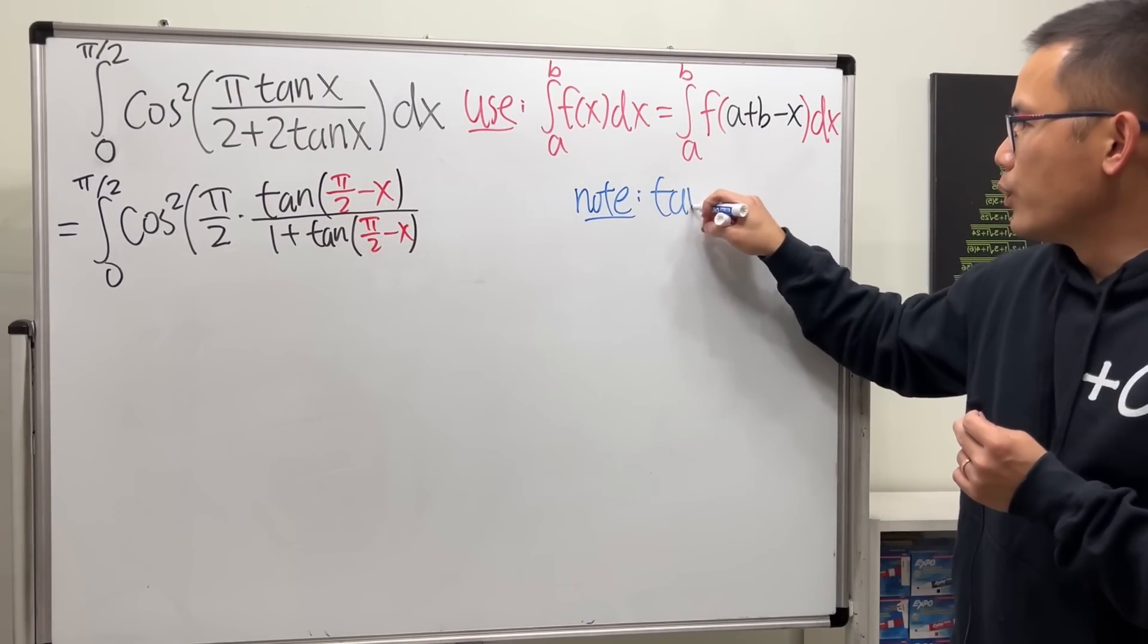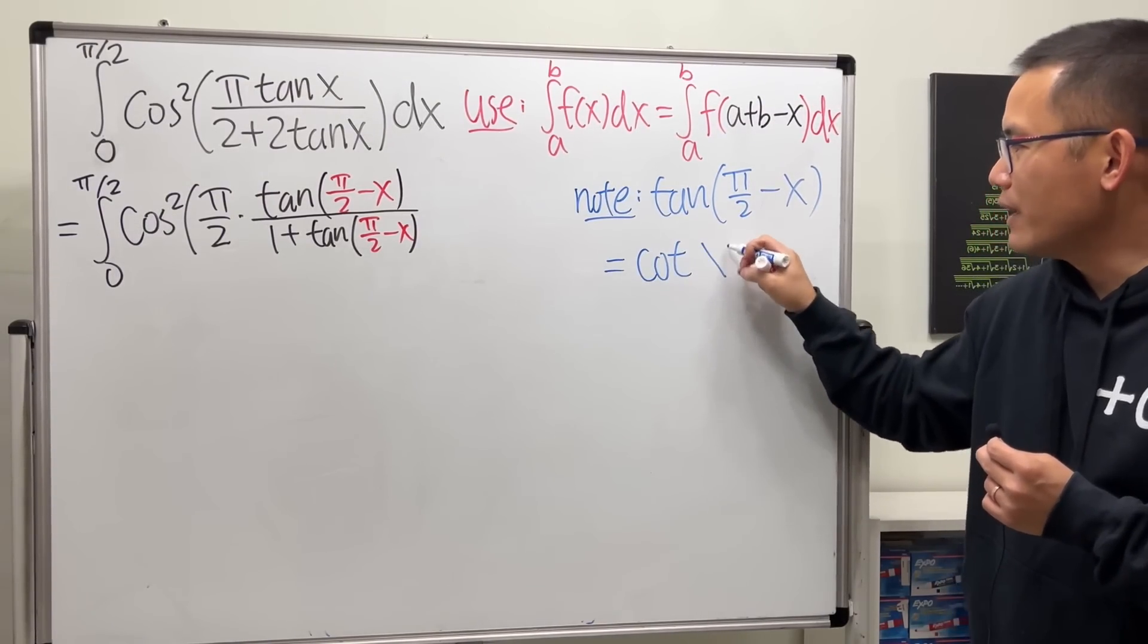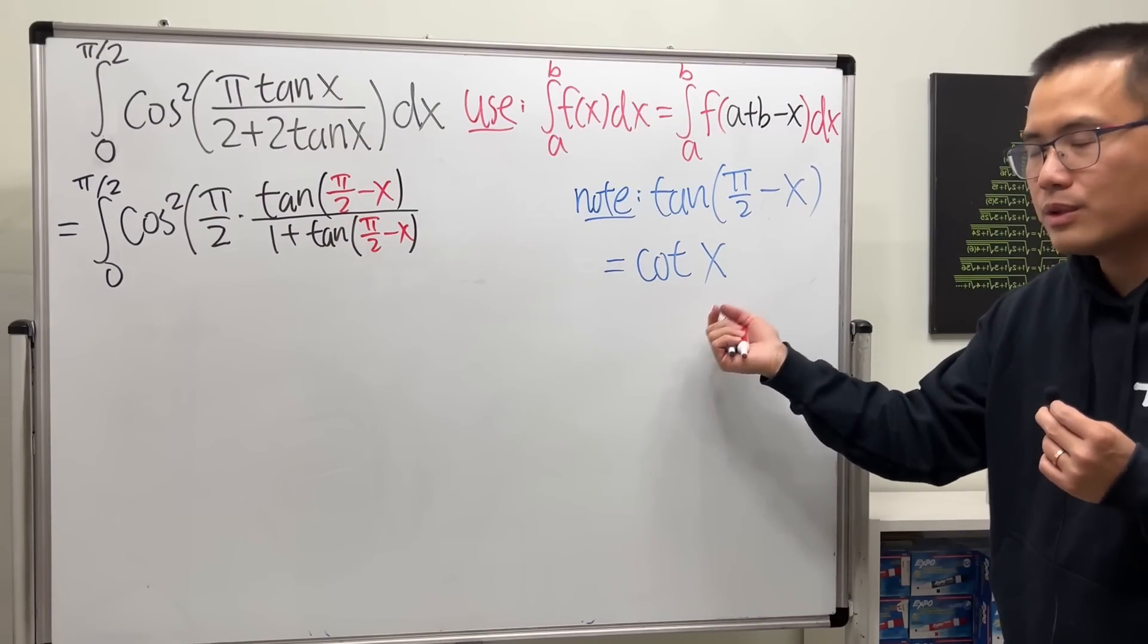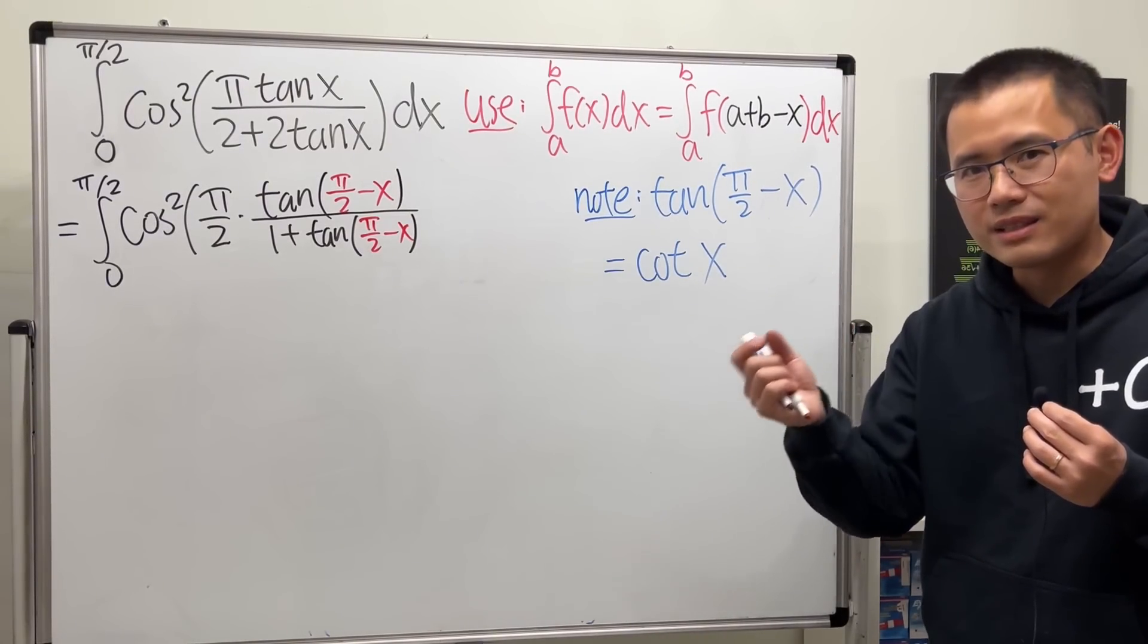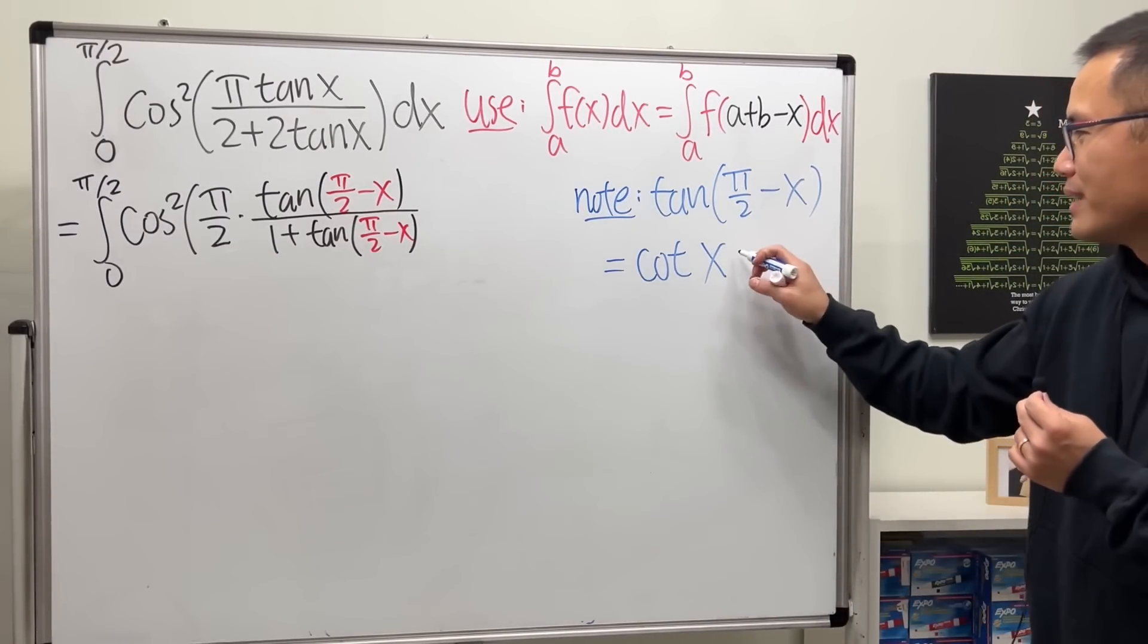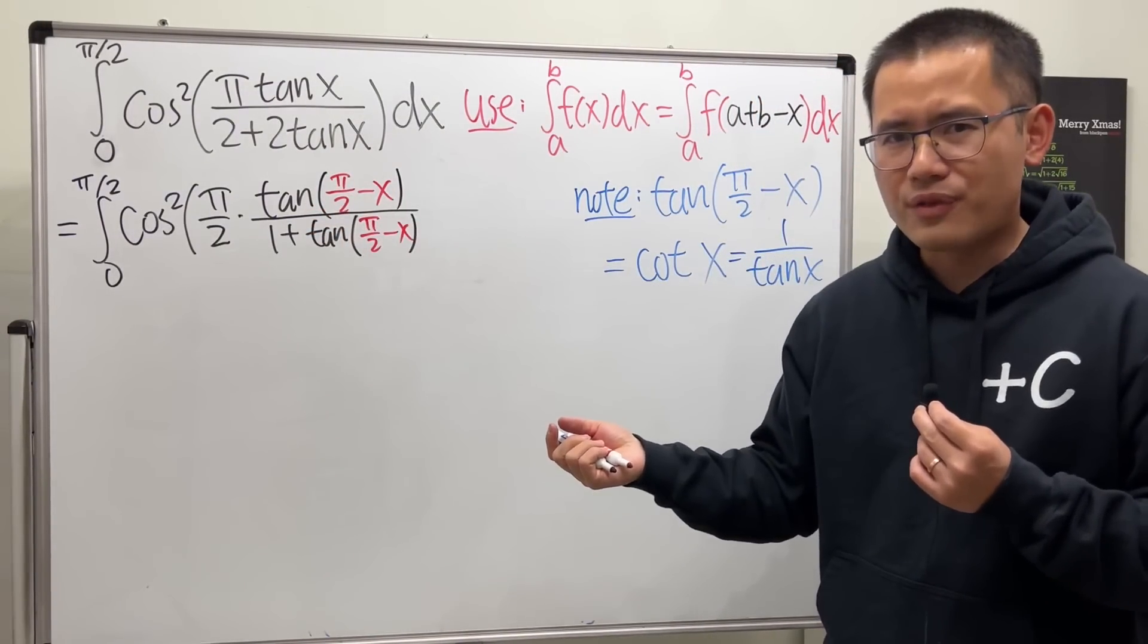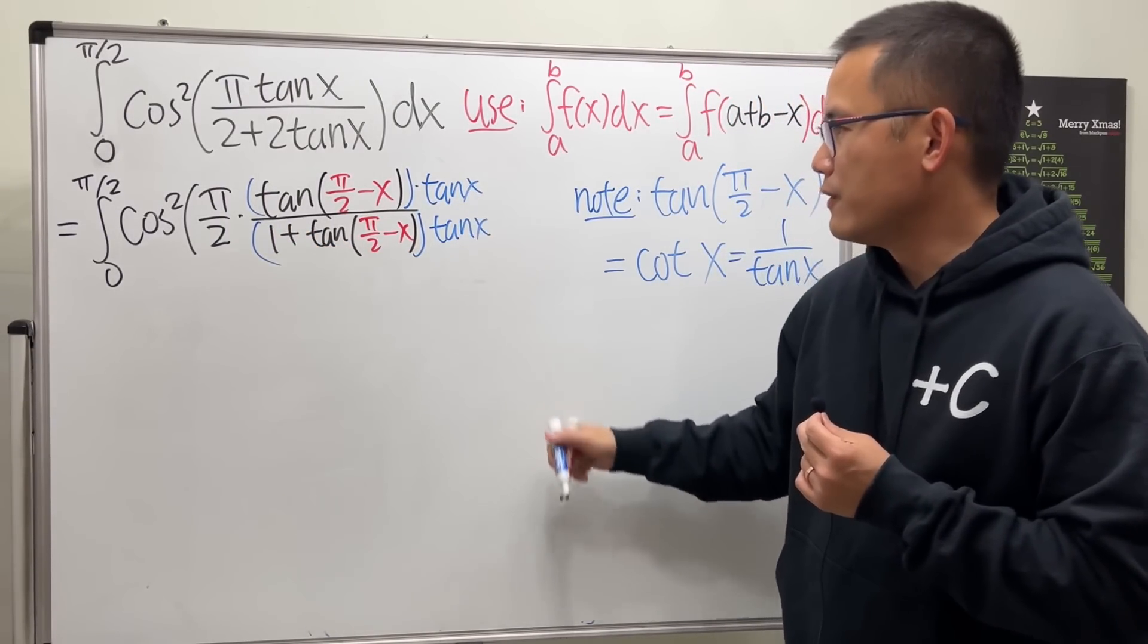Note that when we have tangent of pi over 2 minus x, this is actually pretty nice. Because we can write that as cotangent of x. Why? Tangent and cotangent. Cot because of complementary. If the angles inside add up to 90 degrees, which is pi over 2, then tangent and cotangent will be equal. If you remember that, then you can also remember the identities for sine and cosine, secant and cosecant. But I'm not going to put on cotangent x here and here. I will write it as 1 over tangent x. So this is just 1 over tangent x, and this is also 1 over tangent x, which we'll end up with like a complex fraction. Let's actually just multiply the top and bottom by regular tangent x so that we can fix the complex fraction situation.